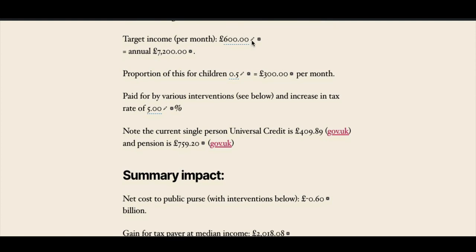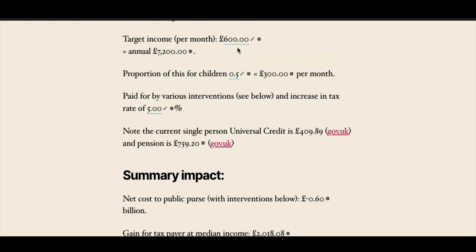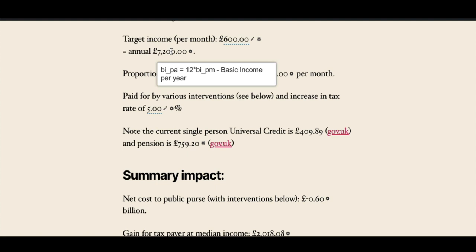You can see here, first of all, a figure which is the target basic income. And you can see as I float over the number, a little tooltip appears. Here's another number on the page, but you can see this number is calculated from the one we've seen before, and the formula is shown as we float over it.